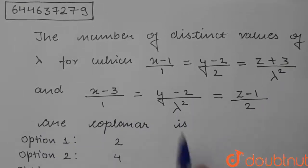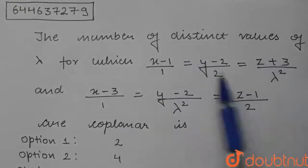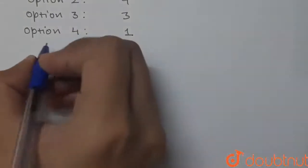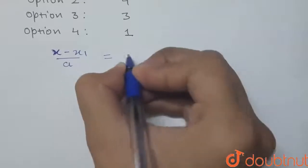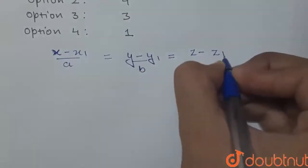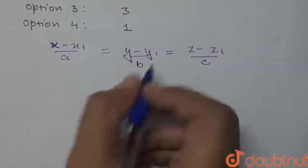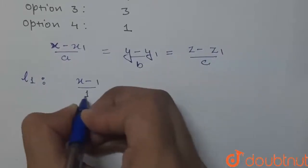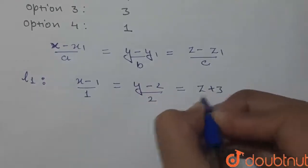So basically in this question, we have to find the distinct values for which these two lines are coplanar — how many distinct values we get for lambda. We know that the general equation of a line in Cartesian form is (x−x₁)/a = (y−y₁)/b = (z−z₁)/c. For Line 1, we are given (x−1)/1 = (y−2)/2 = (z+3)/λ².